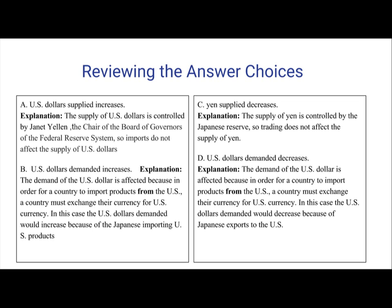Now let's go over to B: U.S. dollars demanded increases. This means that the demand of the U.S. dollar is affected, because in order for a country to import products from the U.S., a country must exchange their currency for U.S. currency. In this case, the U.S. dollars demanded would increase because of the Japanese importing U.S. products. So this is a strong contender to be the correct answer.